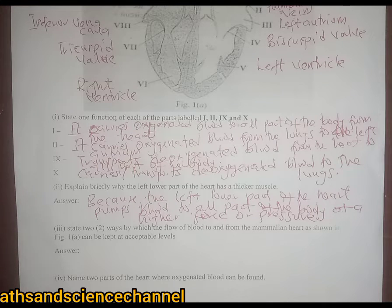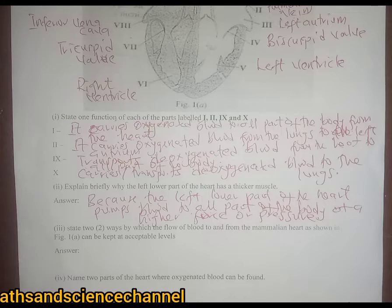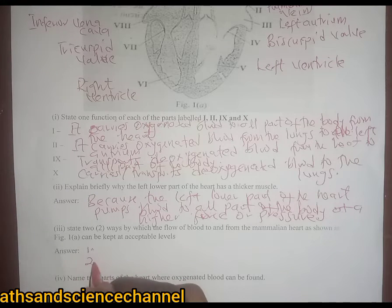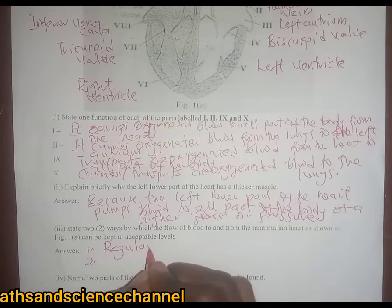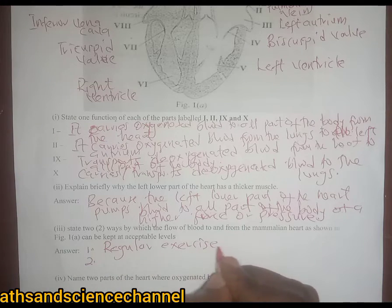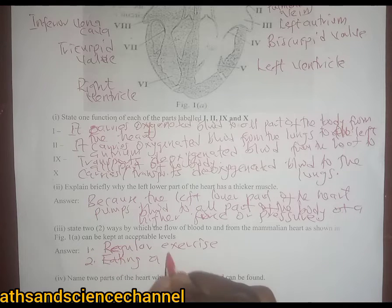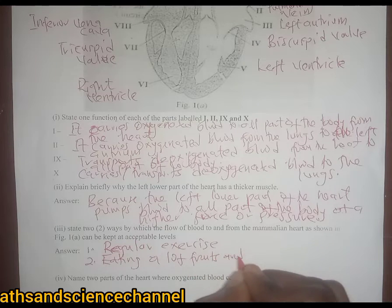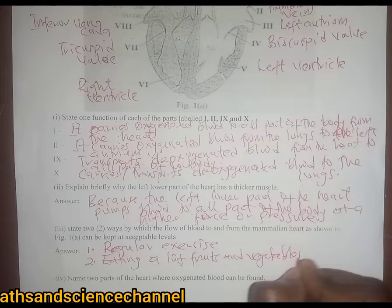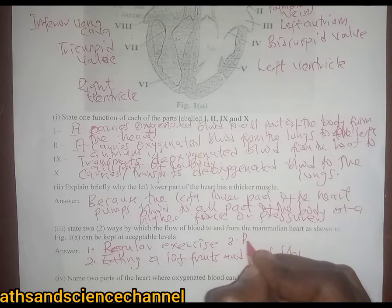Question iii says: state two ways by which the flow of blood to and from the mammalian heart can be kept at acceptable levels. There are many ways, but the question asks for two. One: you can do regular exercise, which helps blood flow through the heart. Two: eating a healthy diet — a lot of fruits and vegetables.